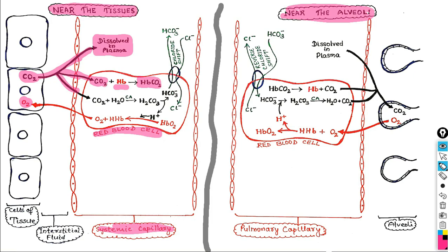CO2 actually attaches itself with the amine group of the amino acids present in the globin part of hemoglobin. The remaining amount of CO2 — the largest amount, about 70 percent — reacts with water in the presence of the enzyme carbonic anhydrase, which makes this process super fast, and the compound formed is carbonic acid (H2CO3). This carbonic acid then gets dissociated into two ions: the bicarbonate ion and the hydrogen ion.